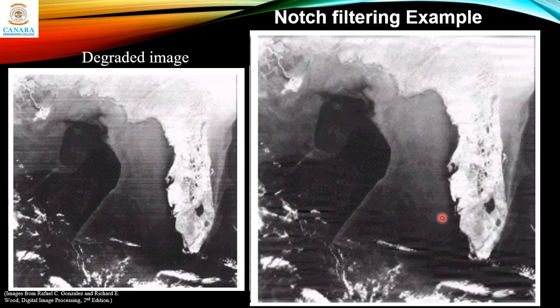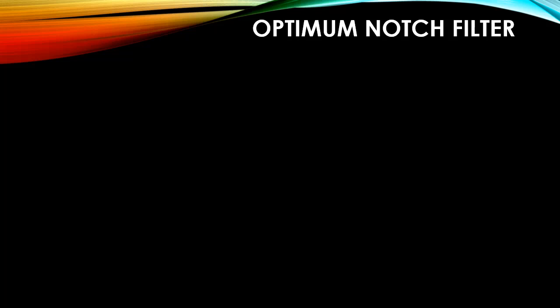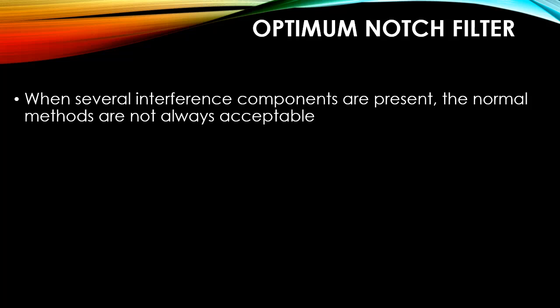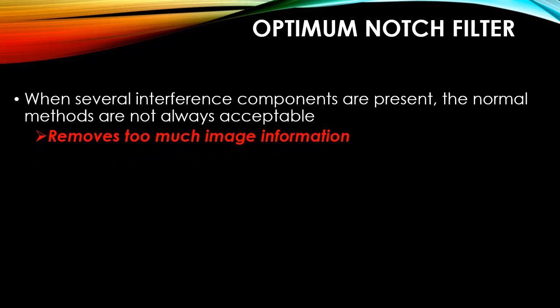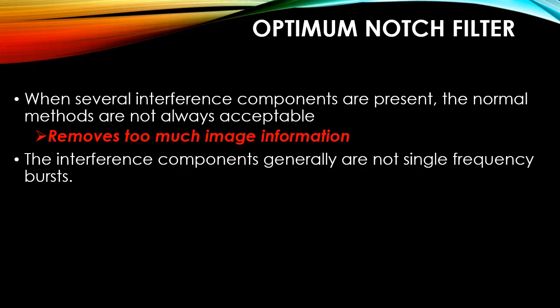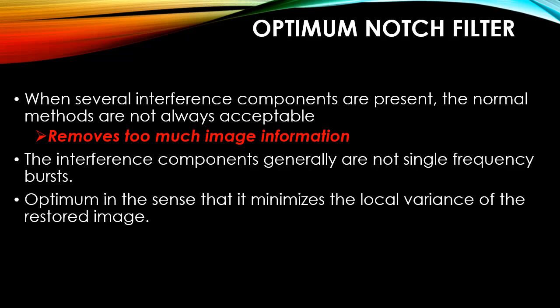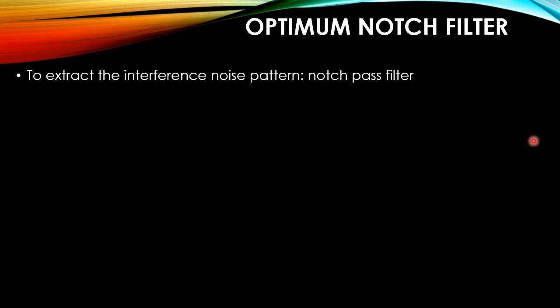The notch filters discussed may not work in all situations. When several interference components are present, the normal methods are not always acceptable because they remove too much image information. The interference components are generally not single-frequency bursts. We need filters that are optimum in the sense that they minimize the local variance of the restored image. To extract the interference noise pattern, we can use the notch pass filter interactively.